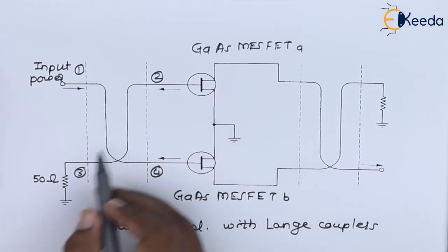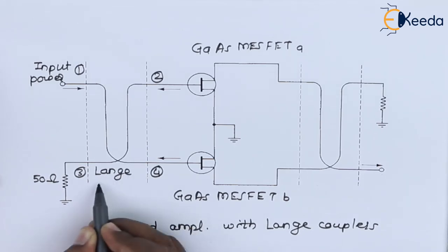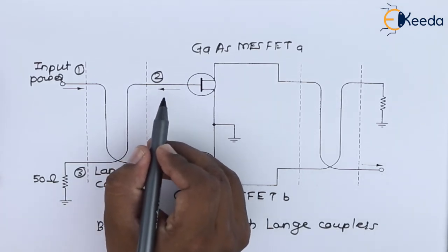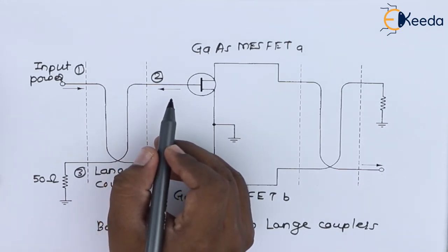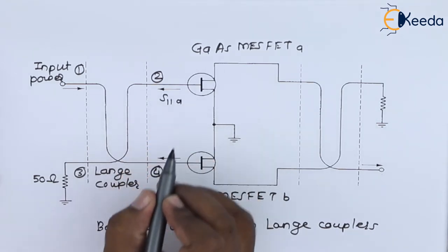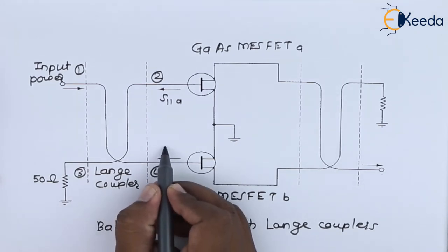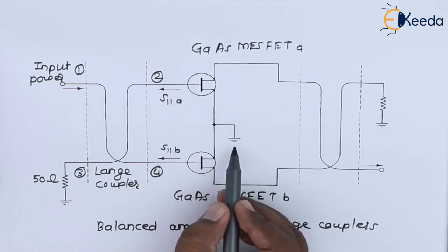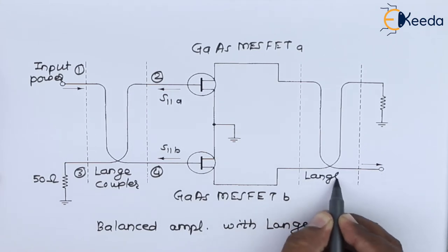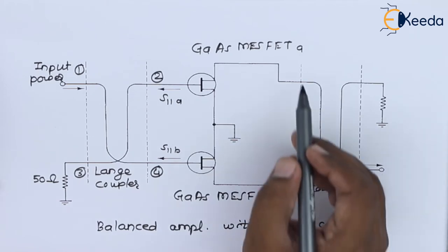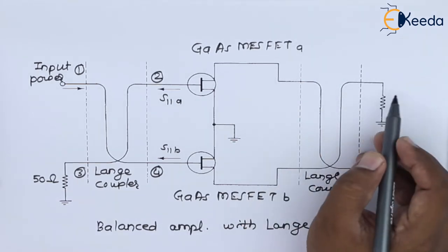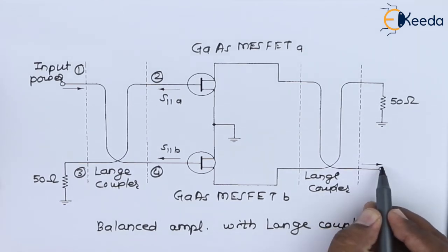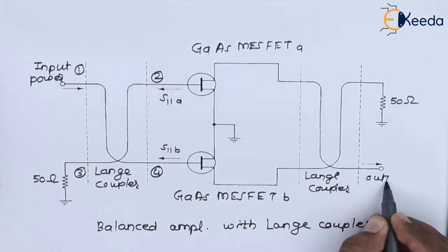This interconnection represents the Lange coupler. The arrow representation gives information regarding the power input-output relationship shown by s_x11a — the scattering coefficient — and s_x11d. After these two components and the common grounded point, we have the Lange coupler on the right-hand side, where a port is terminated with a 50-ohm pure resistance, grounded, and we have the direction to obtain the output power.